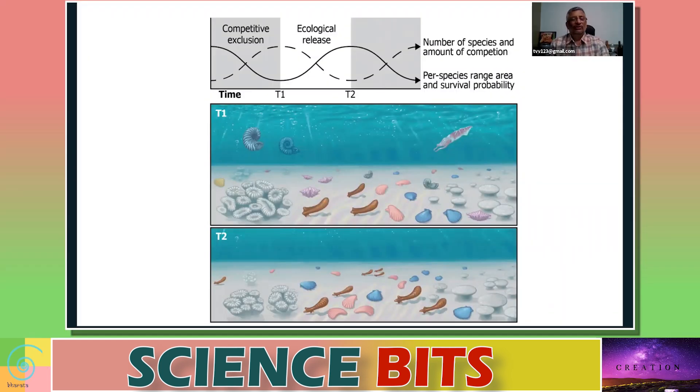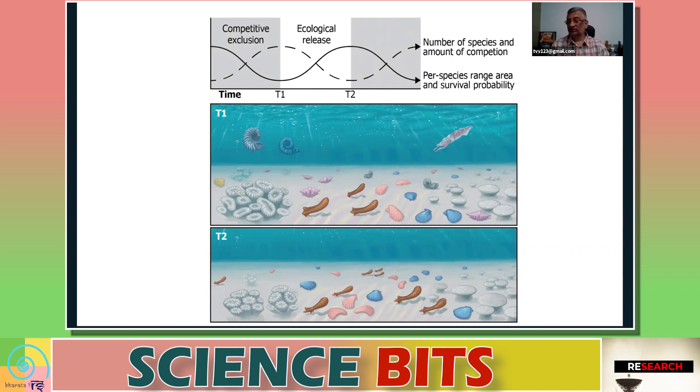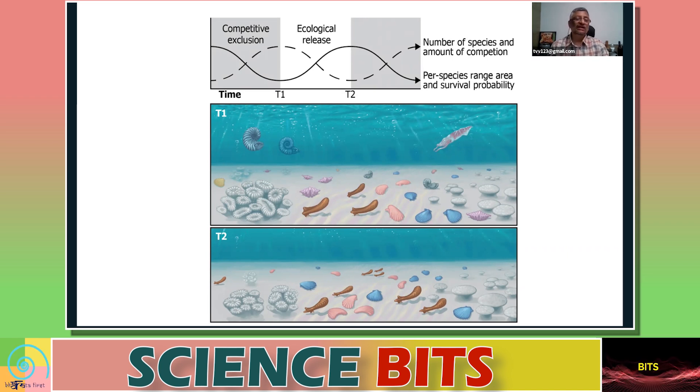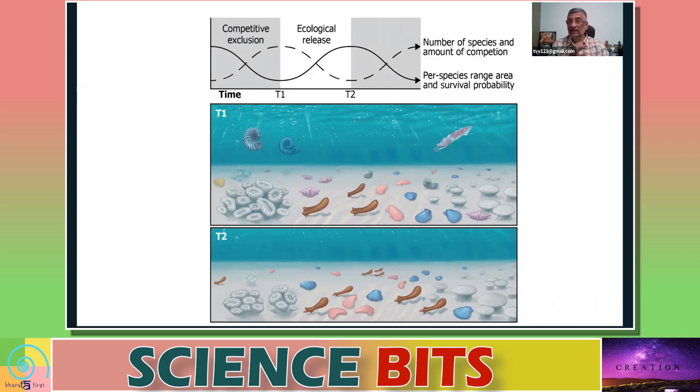Once upon a time there were dinosaurs and today there are no dinosaurs. Once upon a time there were ancient species from which the humans evolved. Those ancient species are not there today in the world. So extinction of species is something that is natural.